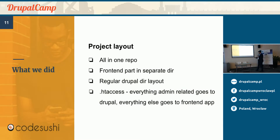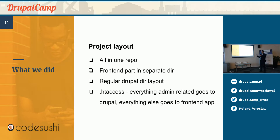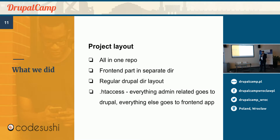As a project it was an all-in-one repository. We put the frontend part in a separate directory and used htaccess to direct Drupal traffic to Drupal and frontend traffic to the frontend. It was really simple. We tested it, it worked well, and we were ready to deploy to Acquia.